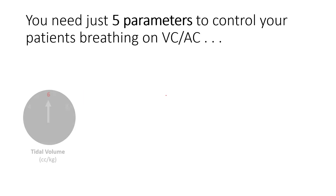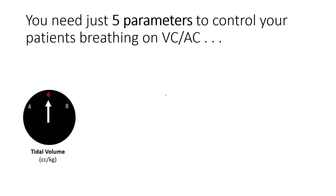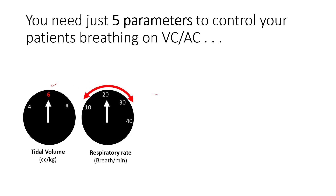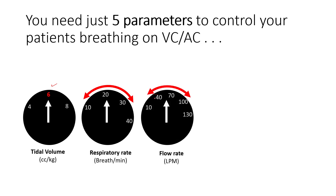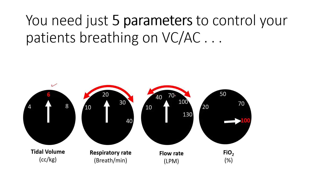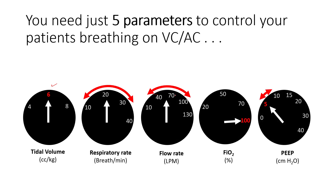So overall, you just need 5 parameters to control your patient's breathing: tidal volume, which you typically start at 6 cc per kg; respiratory rate, ranging from 10 to 30 depending on how the patient was breathing prior to the ventilator; flow rate between 30 to 100 liters per minute; FiO2, which you always start at 100%; and PEEP, which you start at 5 and can go up to 8 or 10.